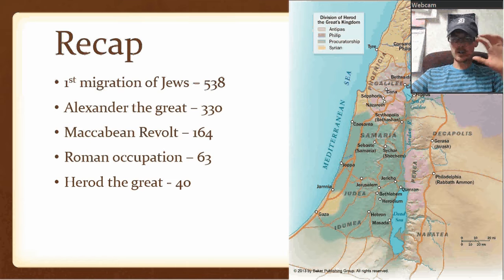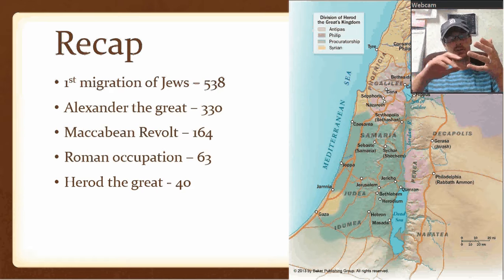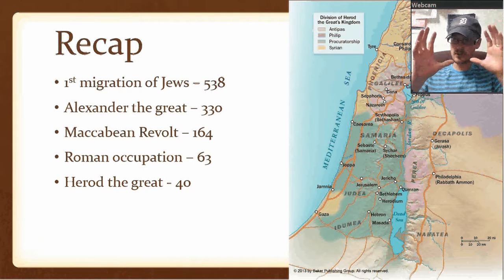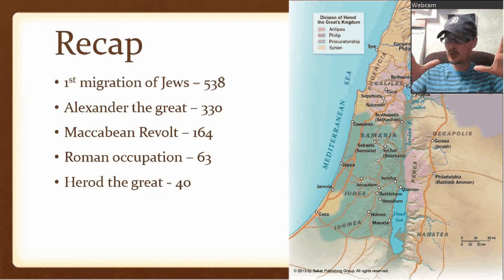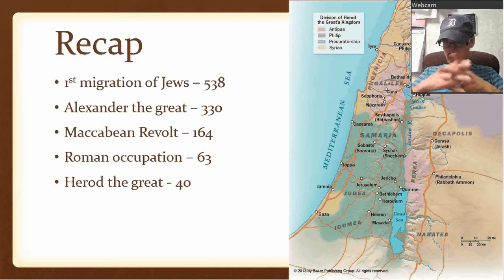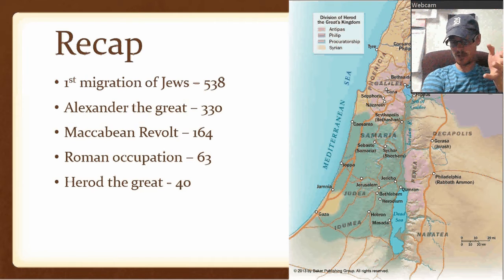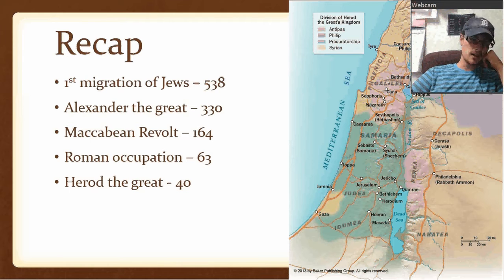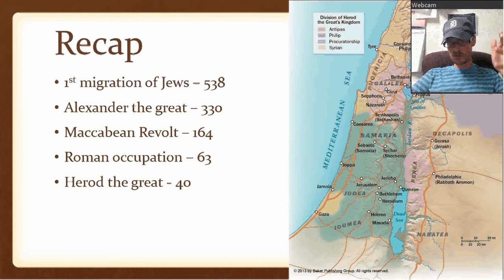Herod the Great — a lot of different things going on with him. He ruled in a couple of different areas and had dealings with various emperors. Long story short, around 40 BC he becomes the king of the Jews, appointed over the Jewish territory. I think it's in 37 that he conquers Jerusalem. So he's known as the king of the Jews.